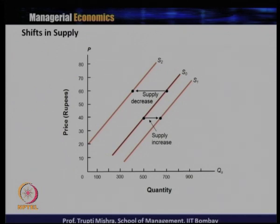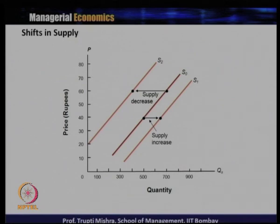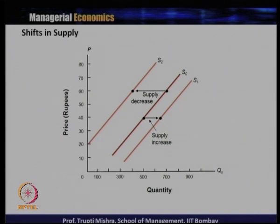If it shifts to the right, that is a case of increase; it shifts to the left in the case of decrease. Initially the supply curve is S0. Supply increases, so the supply curve moves to S1. Supply decreases and the supply curve moves to S2. So a shift in supply is due to non-price determinants — not due to a change in price, but due to changes in other factors which influence supply.